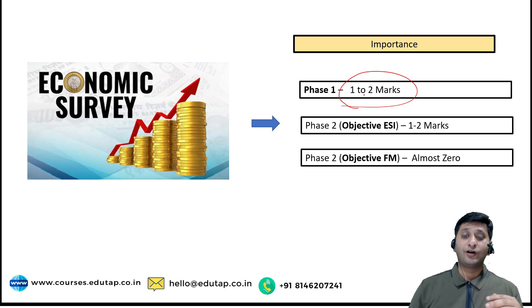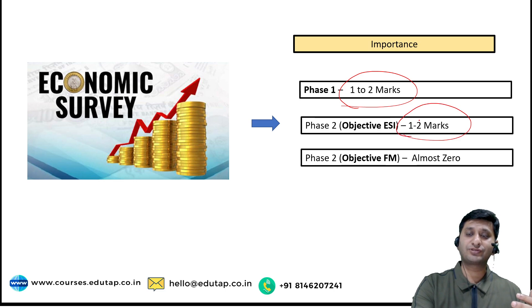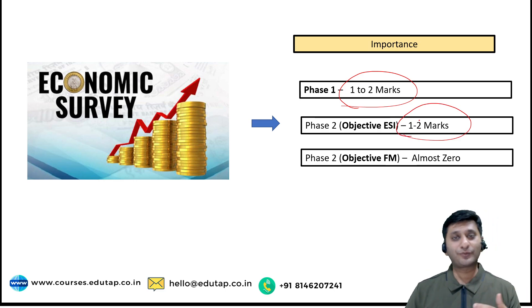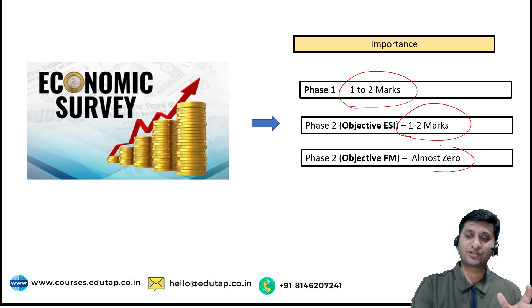In Phase 2, if I talk about objective ESI, again hardly 1-2 marks worth of questions are asked from the Economic Survey each year. And in objective FM, almost zero — Economic Survey questions are asked only in ESI.